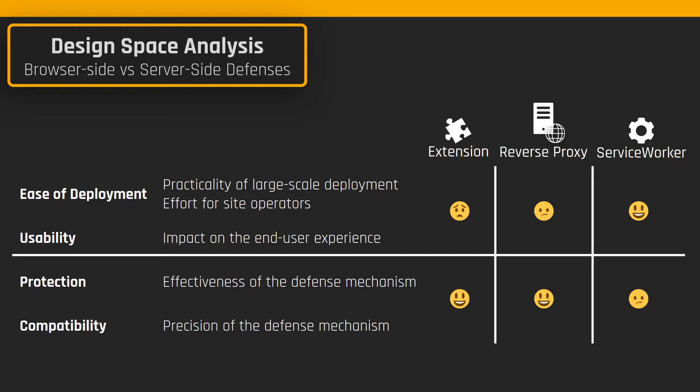Proxies have the advantage of providing transparent protection to users. However, they require site operators to have control over server networking and reroute connections to the proxy. This is typically easy for the TTP, as it is usually a big company, but it might be a problem for some RPs deployed on hosting platforms that allow modifications only to application code. Finally, service workers are the best solution for usability and ease of deployment, as they require site operators to only add a JavaScript file. When users visit the application, the service worker is transparently installed without user interaction.